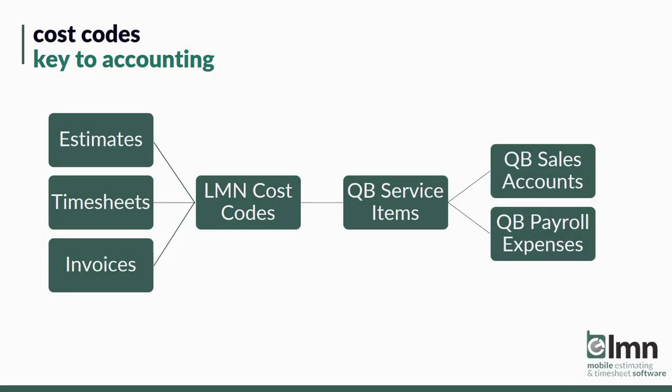LMN has estimates, timesheets, and invoices that sync to QuickBooks. The revenue from estimates and invoices, or the expenses from timesheets, are all linked to LMN cost codes. Those cost codes are linked to QuickBooks service items, and that determines what sales account the revenues go into — or in the case of timesheets, what payroll account or payroll department the timesheet expenses go to.